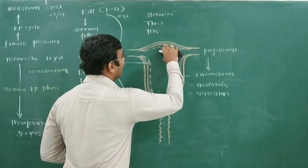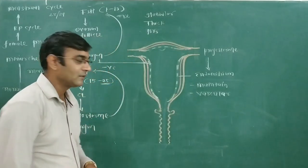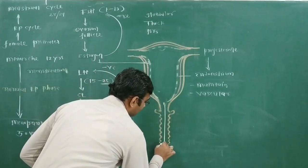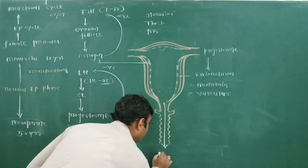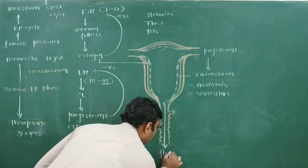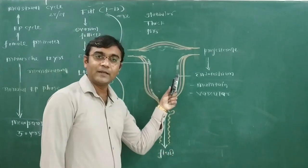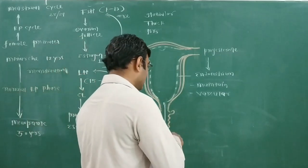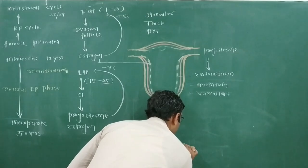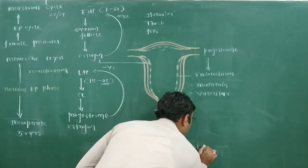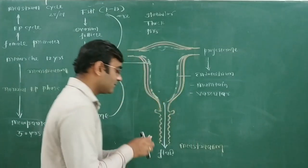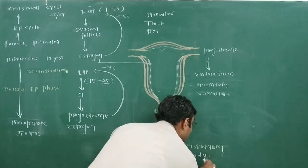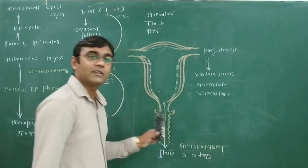So the endometrium sloughs off — meaning breakdown. Tissue of the endometrium plus blood vessels break, and their flow runs outside through the vagina as a form of fluid — that is menstruation. This menstruation runs for a minimum of 3 to a maximum of 5 days.